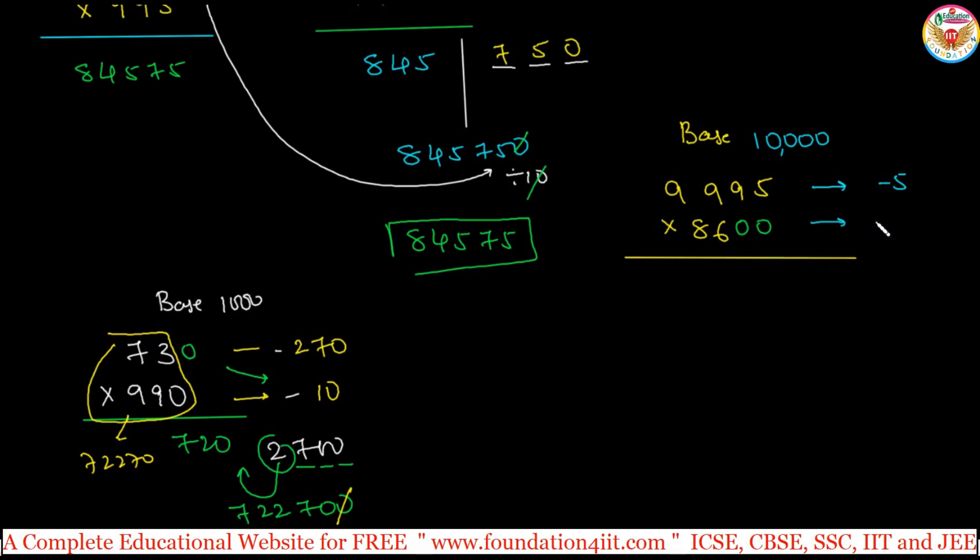Instead of taking this very lengthy, now 1400 into 5—just 14 times 5 is 70. Extra two zeros, just keep in mind this concept.